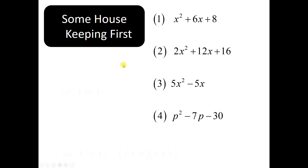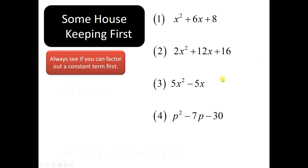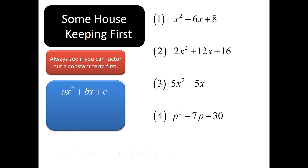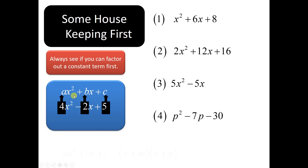Let's do a little housekeeping first. The first thing you always want to check for is to see if there's a common factor you can factor out of all the terms. A lot of times we get out of the habit of checking that. Now the second thing is, let's get a way to talk about the terms of a quadratic: ax squared plus bx plus c. If we had 4x squared minus 2x plus 5, then a would be 4, b would be negative 2, and c would be 5. These are the coefficients. So if I talk about b, you know I'm talking about the coefficient of x — the number in front of x. And a would be the coefficient of x squared.